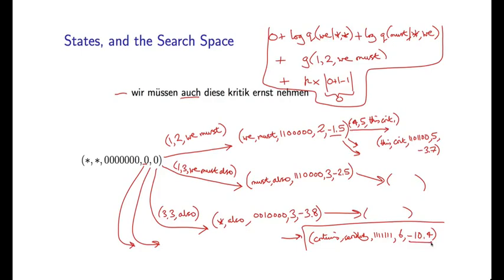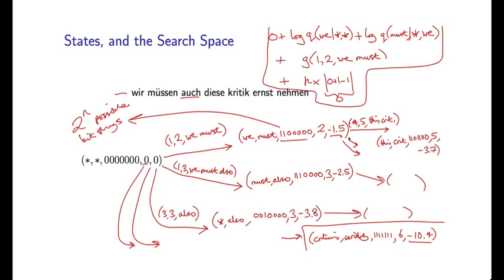It's important to realize that this graph is exponential in size. For any bit string of length n, there are two to the n possible bit strings, so there are going to be an exponential number of nodes in this graph, meaning we're not going to be able to explore it exhaustively. But this is a very useful picture to have in mind: a directed graph where states are the nodes, outgoing arcs are labeled with choices of phrases, and at each point the phrase combined with the previous state specifies the next state in this graph.